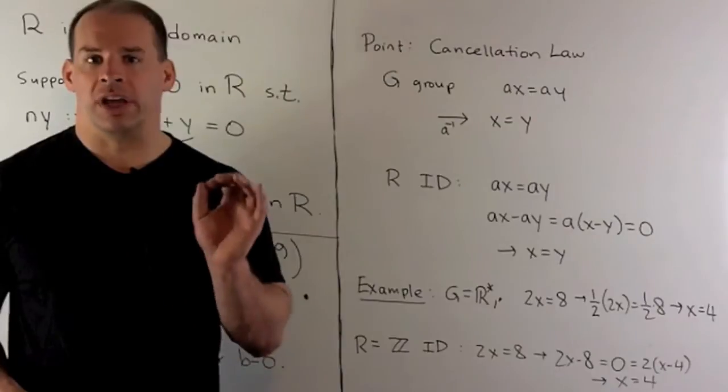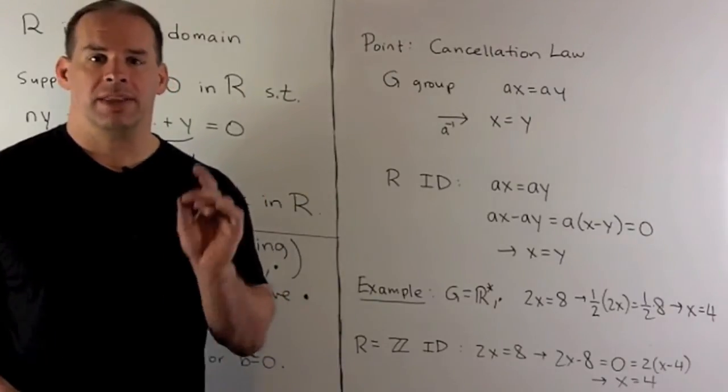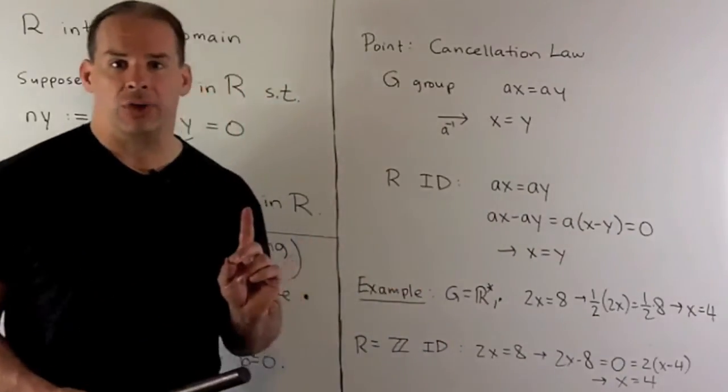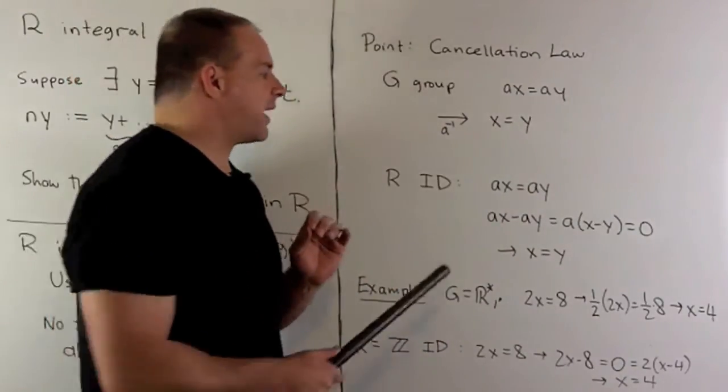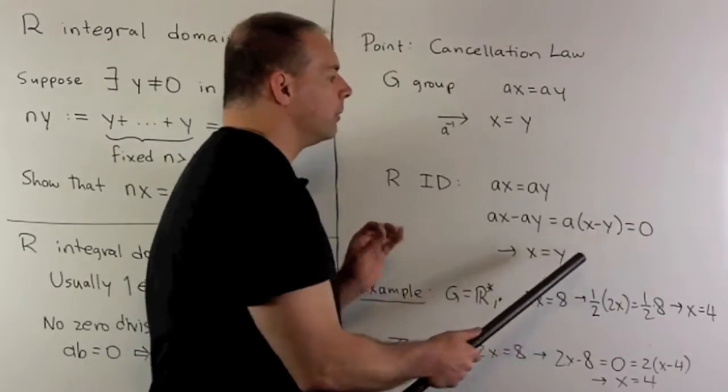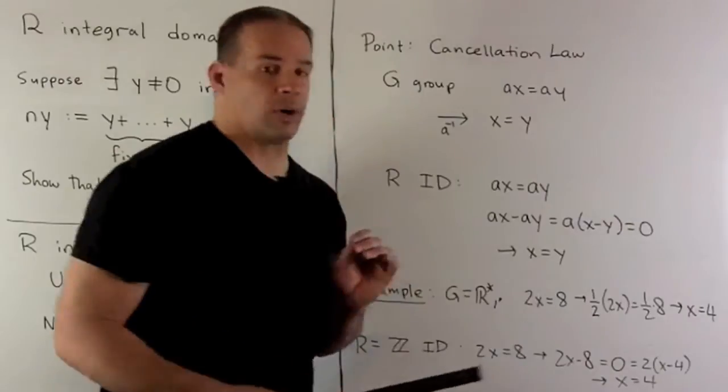We have the same rule for an integral domain. If I have ax equals ay, I move the ay to the other side, then I factor the a out. That's going to be equal to zero. So that means either a is zero or x minus y is zero.